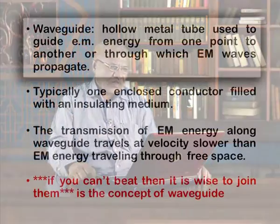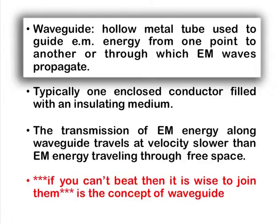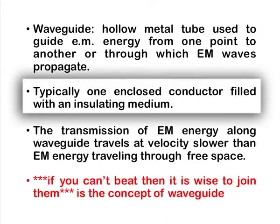Now the problem of radiation has been overcome automatically because the signal is processed and transmitted in the form of the wave itself. In a waveguide, the hollow metallic tube is used to guide the EM energy from one point to another, through which the EM wave propagates. Typically, one enclosed conductor filled with an insulating or dielectric medium. Generally, air is used inside the waveguide, but when high power levels are required, other dielectric materials with high dielectric strength — such as plastics and teflons — are filled inside the waveguide.